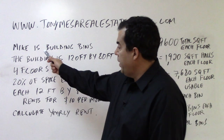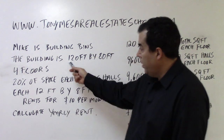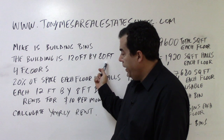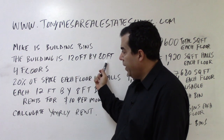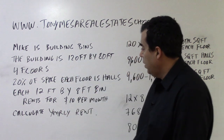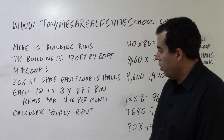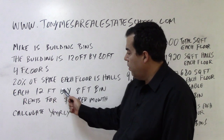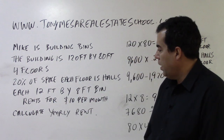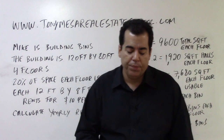So they begin by telling you Mike is building bins. The building is 120 feet by 80 feet, four floors. 20% of the space in each floor is halls. Each 12-foot by 8-foot bin rents for $10 per month. Calculate the yearly income.